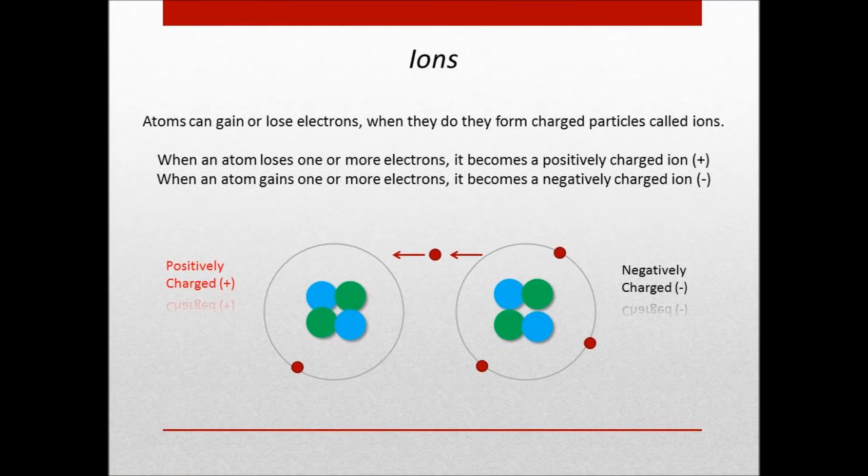Atoms can gain or lose electrons. When they do, they form charged particles called ions. When an atom loses one or more electrons, it becomes a negatively charged ion.